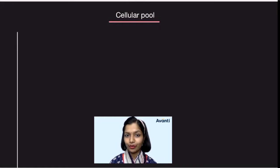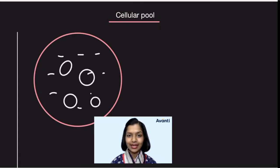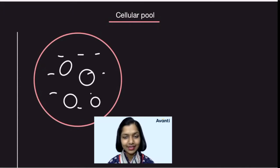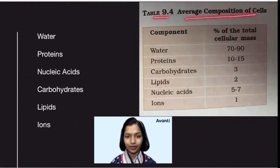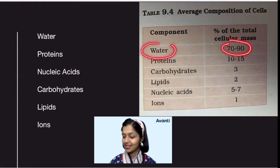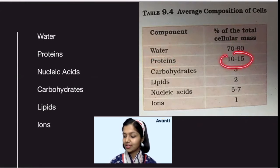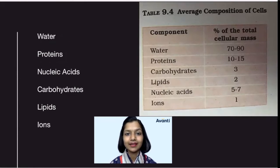So cellular pool — inside the cell, what all molecules do you get? You can have carbohydrates, you can have water, protein, nucleic acid, lipids, ions. This is the table in your book, 9.4, where you need to learn about the average composition of the cells. On an average: water is 70-90%, proteins 10-15%, carbohydrates 3%, lipids 2%, nucleic acid 5-7%, ions 1%. My work here is to make it very simple for you, so that you never forget it.